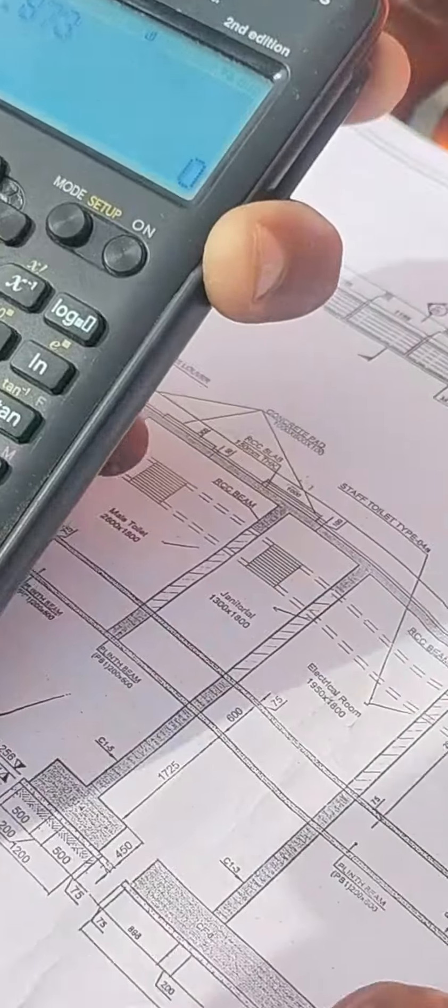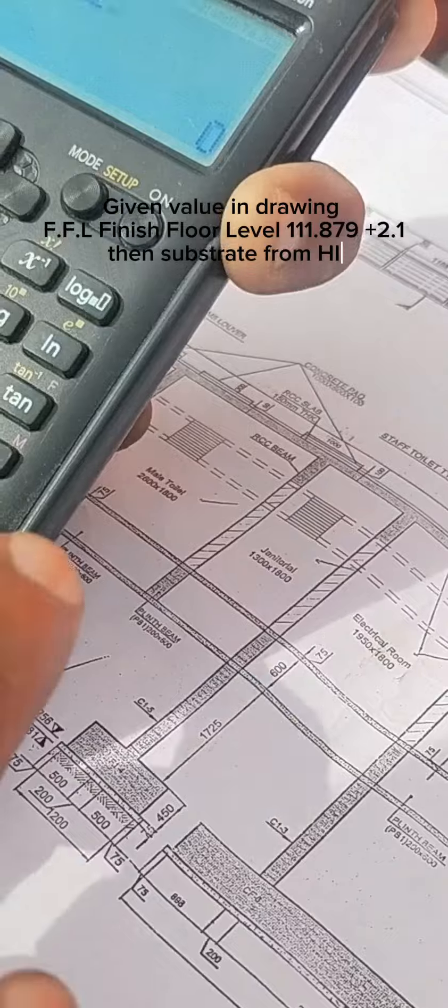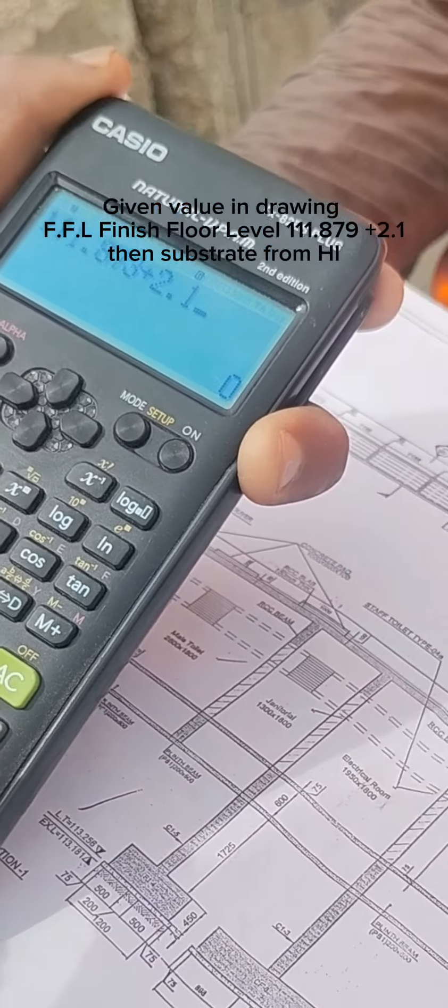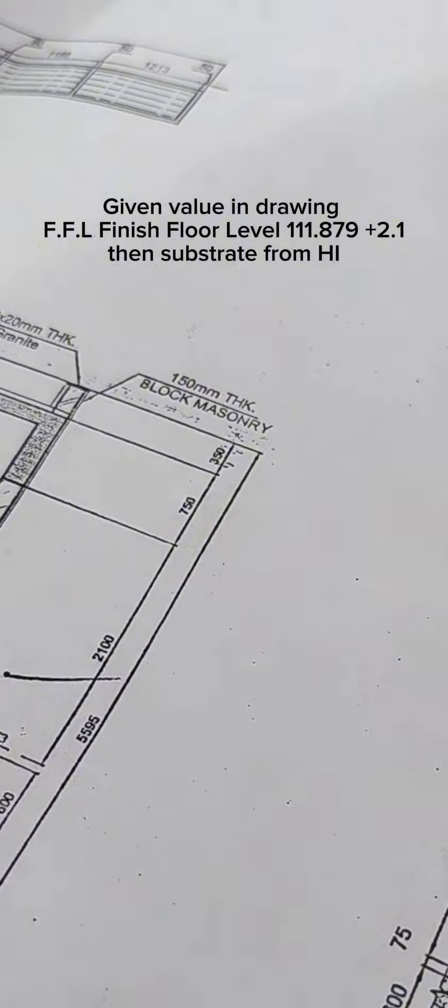Look at that. Given value in drawing, FFL finish floor level 111.879, plus 2.1, then subtract from HI.